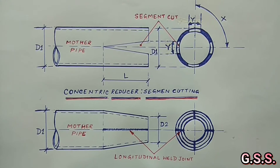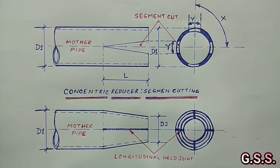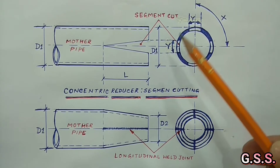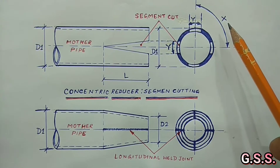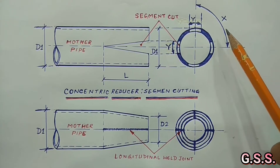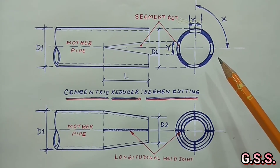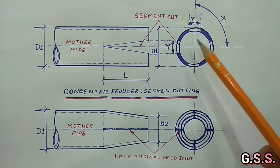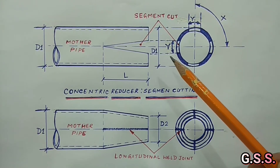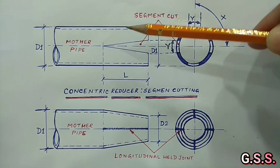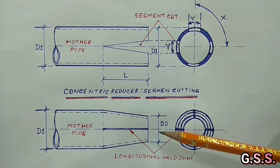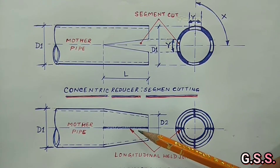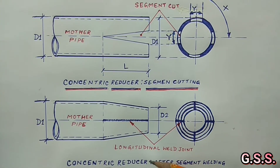This is the segment cutting drawing for a concentric reducer from a mother pipe. L is the reducer length. D1 is the large end diameter. Y is the width of the segment cut. X is the angle between cut segments. This sketch indicates 4 cut segments and 4 uncut segments. After cutting the segments from the mother pipe, the uncut segments are heated and pressed to achieve the smaller end diameter D2 of the reducer. Then longitudinal joints are welded, and this is the sketch of the concentric reducer after longitudinal welding of segments.